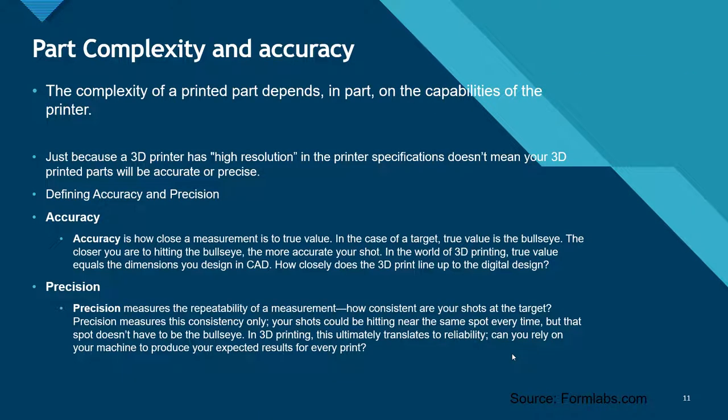The complexity of a printed part depends in part on the capabilities of the printer. Just because a 3D printer has high resolution in its specification doesn't mean your 3D printed parts will be accurate or precise. Accuracy is how close a measurement is to its true value. In the case of a target, the true value is the bullseye — the closer you are to hitting the bullseye, the more accurate your shot. In 3D printing, true value equals the dimensions you design in CAD.